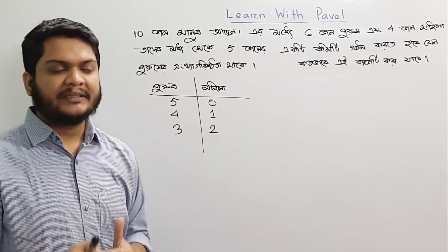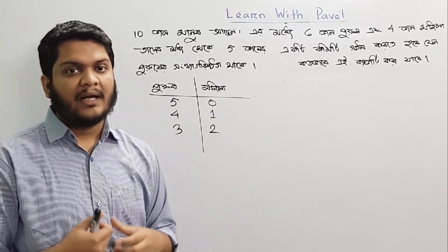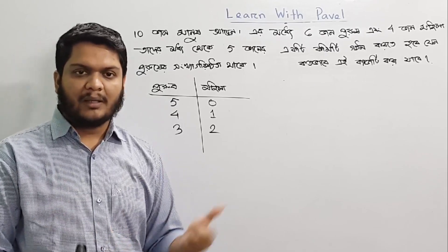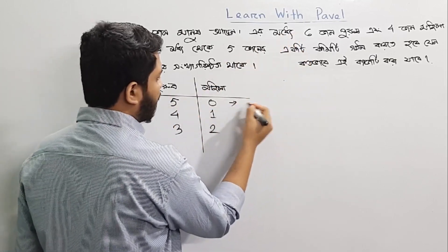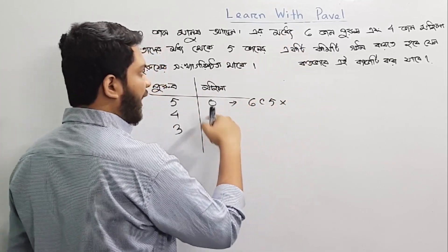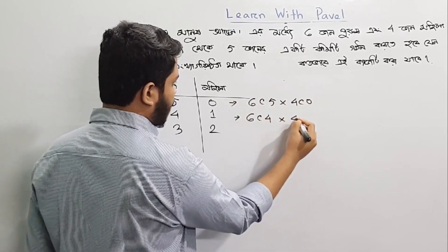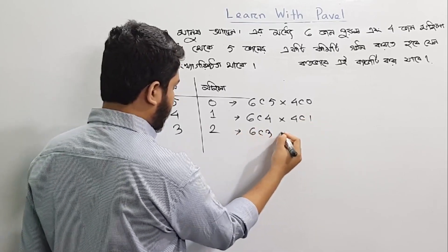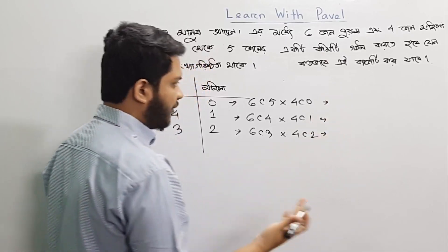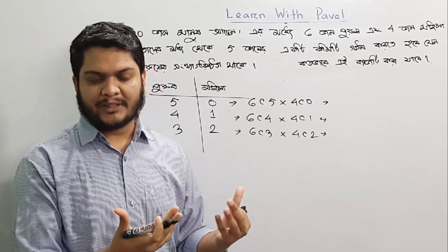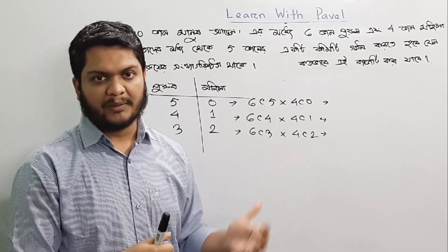So this is a simple way. We will just have a calculation of this. We are going to start. This case is 4C0. This case is 64 into 4C1. This case is 63 into 4C2. This case is good. So 65 is the concept of Sampur Kshamwesh, which is a good idea of the committee.